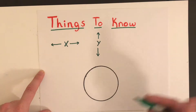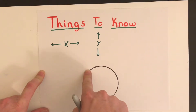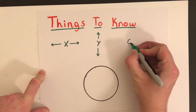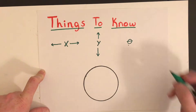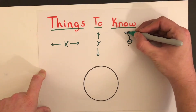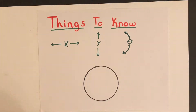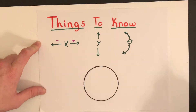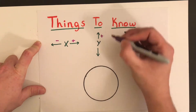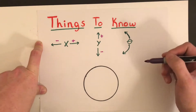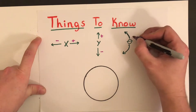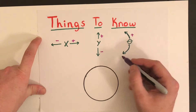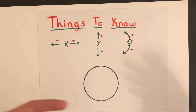We represent angular position — where something is along a circle — with the Greek letter theta. That means it's moving around a circle either counterclockwise or clockwise. On the x-direction, left is negative and right is positive. On the y-direction, upwards is positive and downwards is negative. With angular position, counterclockwise is considered positive and clockwise is considered negative.